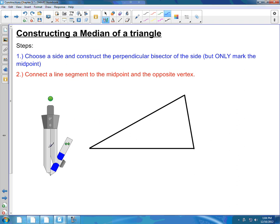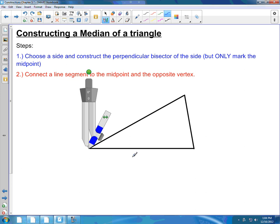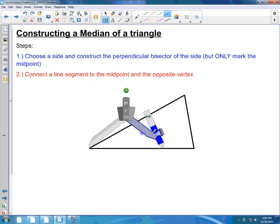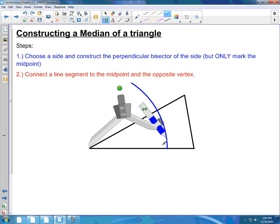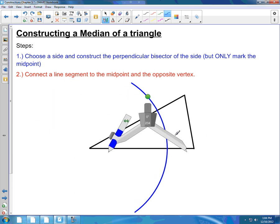For step one, I'm going to take my compass. I'm going to choose the bottom side here. I'm going to open up the compass to just over half to construct a perpendicular bisector. You draw an arc above and below, then switch to the other endpoint. Same process: draw an arc above and below.